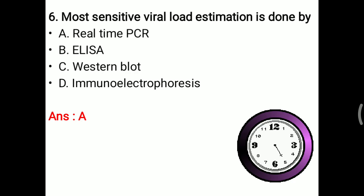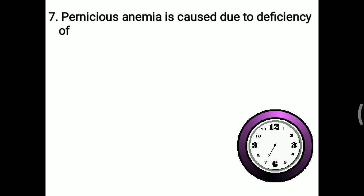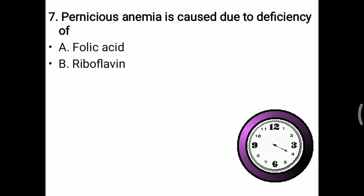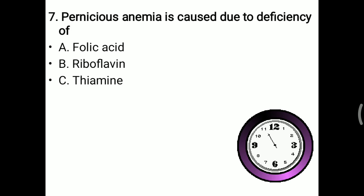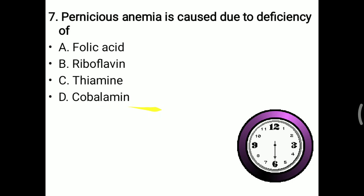Next MCQ: pernicious anemia is caused due to deficiency of. Folic acid leads to macrocytic anemia. Riboflavin deficiency causes angular stomatitis, cheilosis, and glossitis. Thiamine deficiency is related to beriberi. Cobalamin (vitamin B12) is related to pernicious anemia. So the right answer is D — pernicious anemia is caused by deficiency of cobalamin.